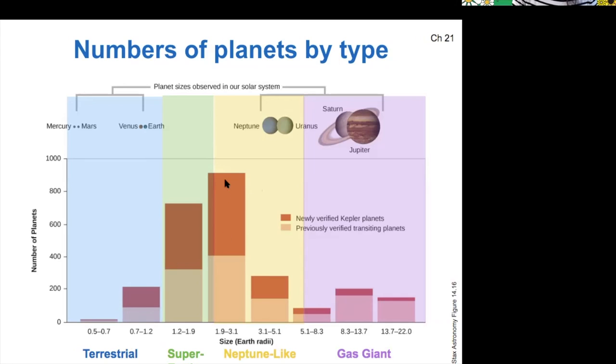So these Neptune-like planets and super-Earths are not represented by any planet in our solar system. For us, Neptune and Uranus are on the high mass side of these Neptune-like planets, but there's a lot more that are like them, but lower mass.